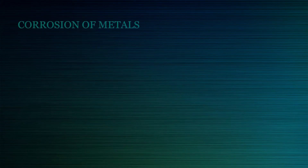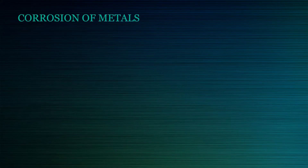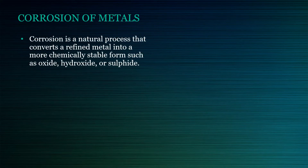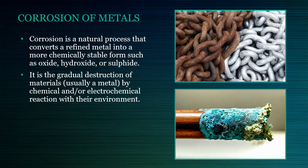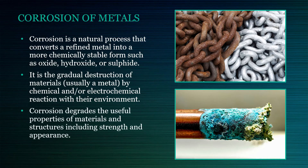Today, we are going to start learning about corrosion of metals. What is corrosion? Corrosion is a natural process that converts a refined metal into a more chemically stable form, such as its oxide, hydroxide or sulphide. It is the gradual destruction of materials, usually a metal, by chemical and/or electrochemical reaction with their environment. Corrosion degrades the useful properties of metals and structures, including their strength and appearance.